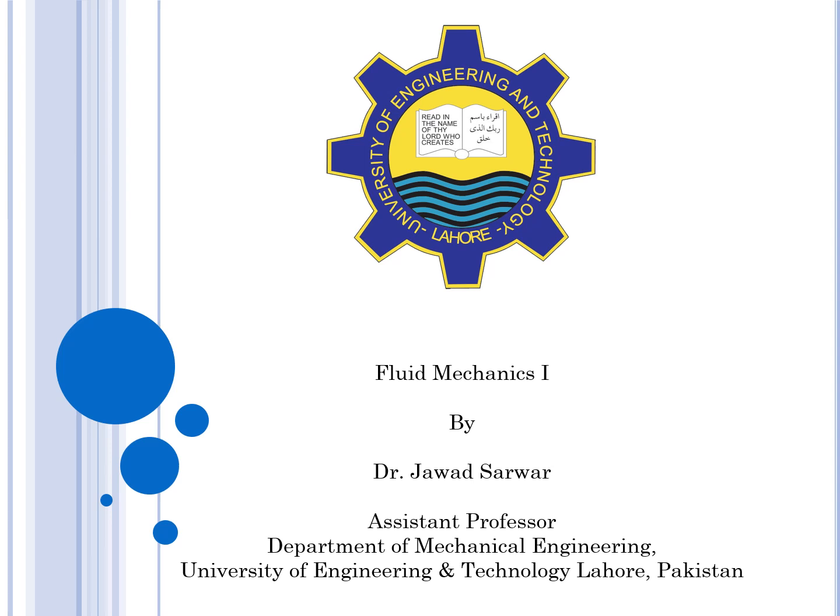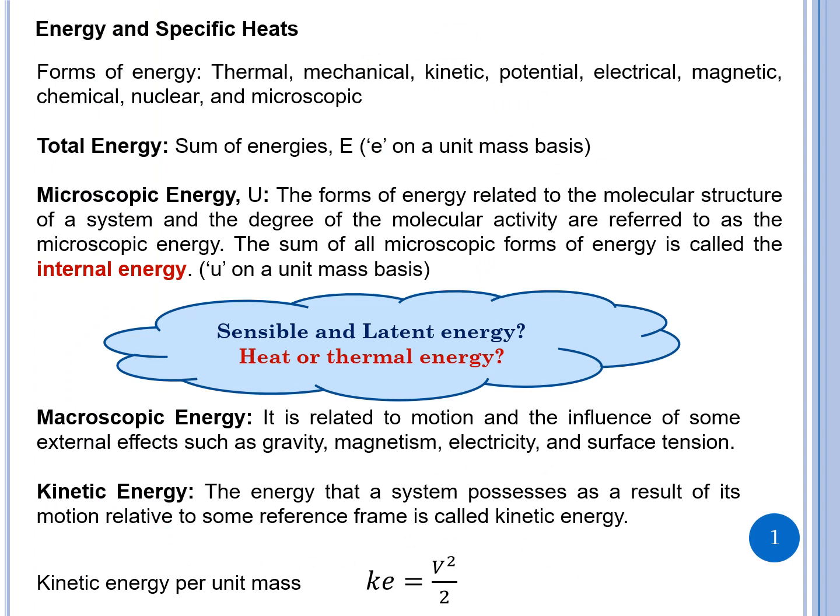We are going to discuss energy and specific heats. Energy can have different forms: thermal, mechanical, kinetic, potential, electrical, magnetic, chemical, nuclear, and microscopic energy. The total energy is the sum of these energies, referred to as uppercase E. On a unit mass basis, it is referred to as lowercase e. Microscopic energy is generally called internal energy.